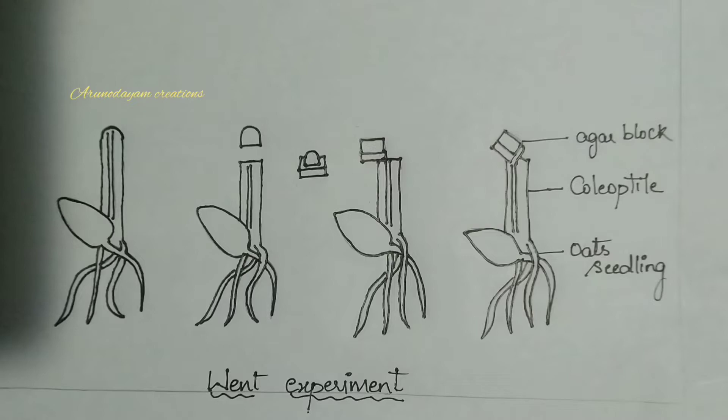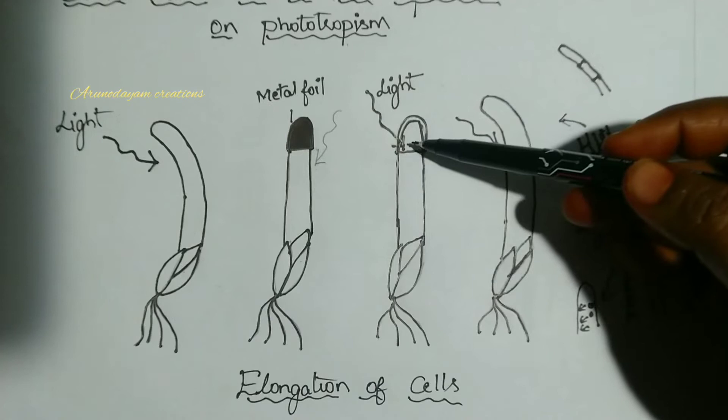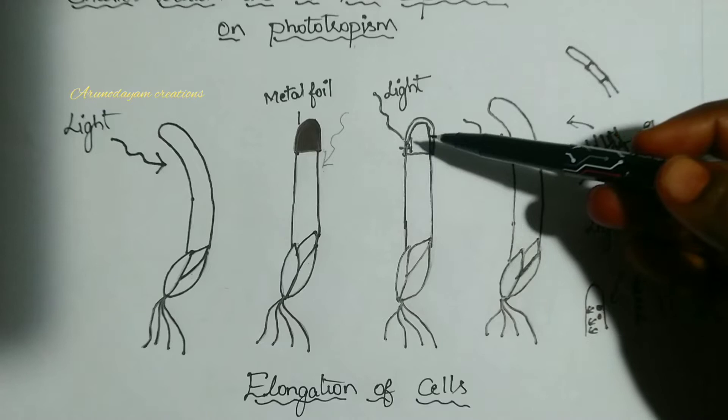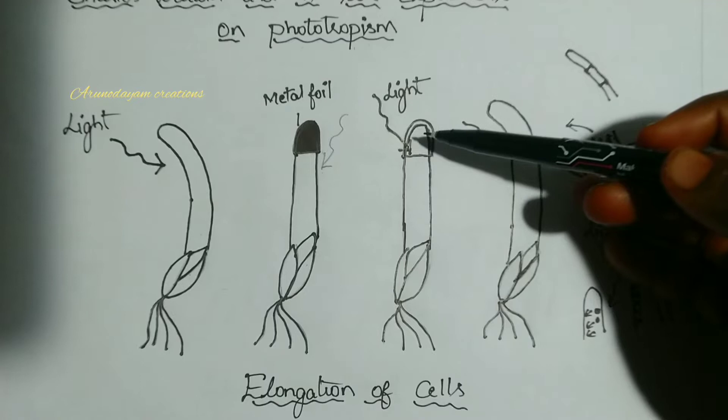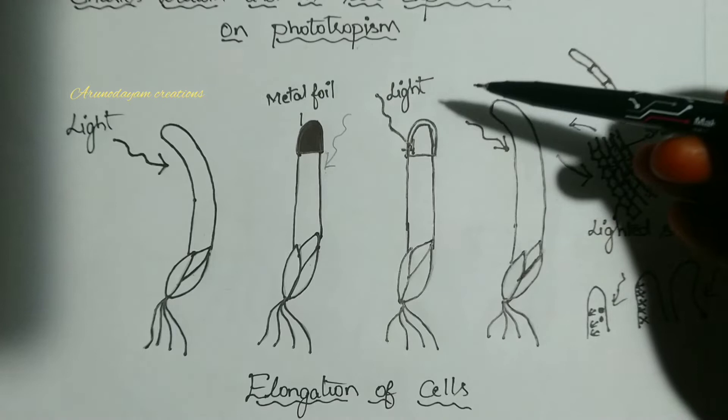What they concluded in that experiment is the tip portion of coleoptile has some substance, and that substance is responsible for bending of plant towards light. They called this substance 'influence' and did not conduct further experiments on it.